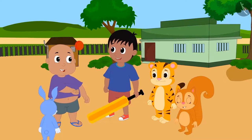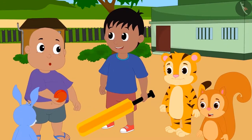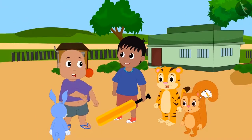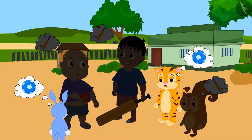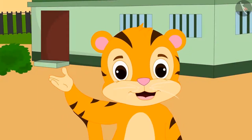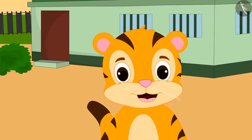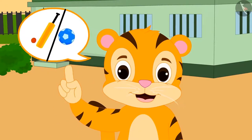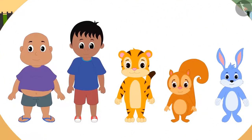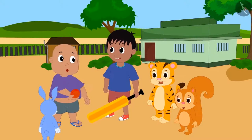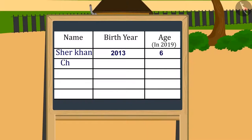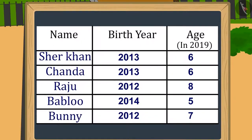All children are deciding together which game they want to play today, but everyone has a different opinion. Someone wants to play cricket, someone wants to play football. Then Sheer Khan said, why not decide today in a unique way which game they should play? Today, whosoever is the eldest among them will get to decide which game they all will play together. Everybody liked Sheer Khan's suggestion, and one by one they wrote the year of birth and age on a board.